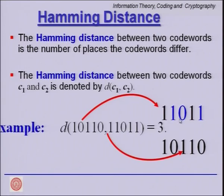It should be pointed out that Hamming distance is not necessarily computed only between binary bit streams. These could be vectors of any symbols or characters. The only conditions are that the elements come from the same set and the vectors are of equal length.